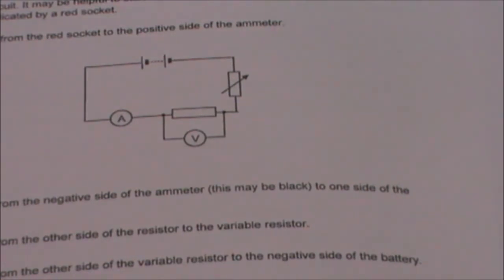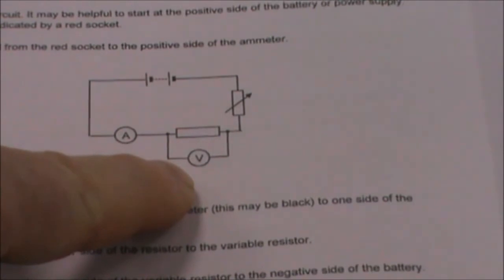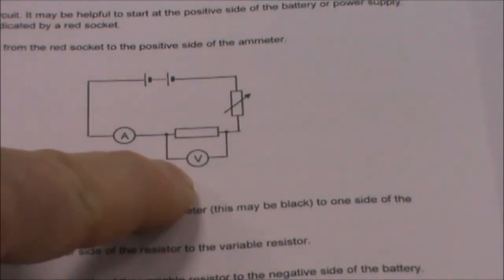The last thing that we're going to connect to our circuit is our voltmeter. The reason that we do this last is because we don't want to get confused and put it into the circuit in series. The voltmeter always goes in parallel.